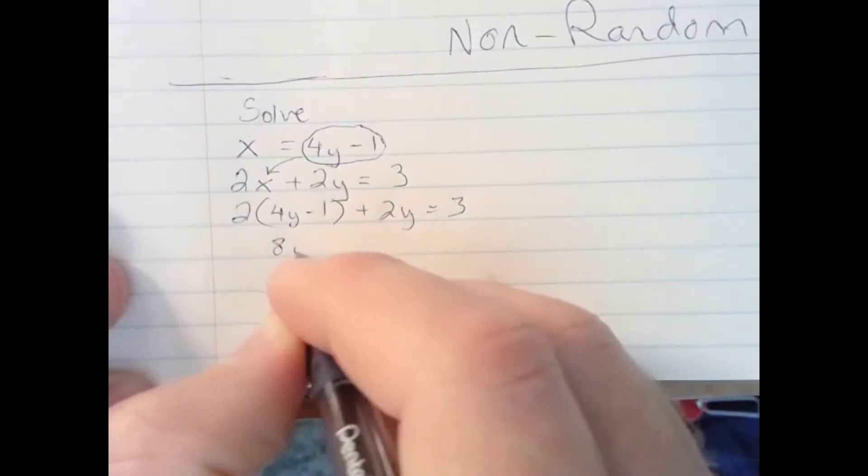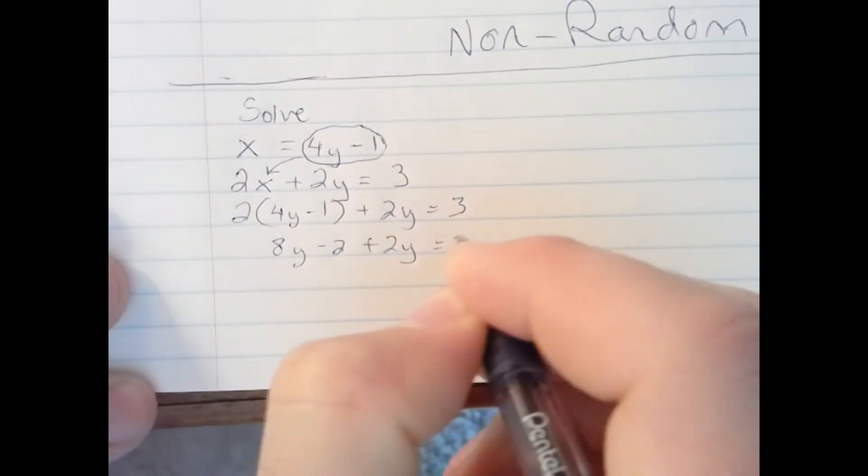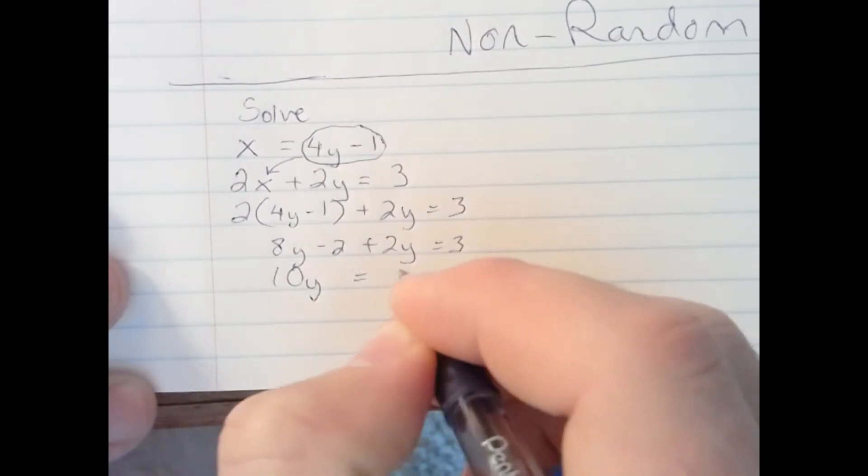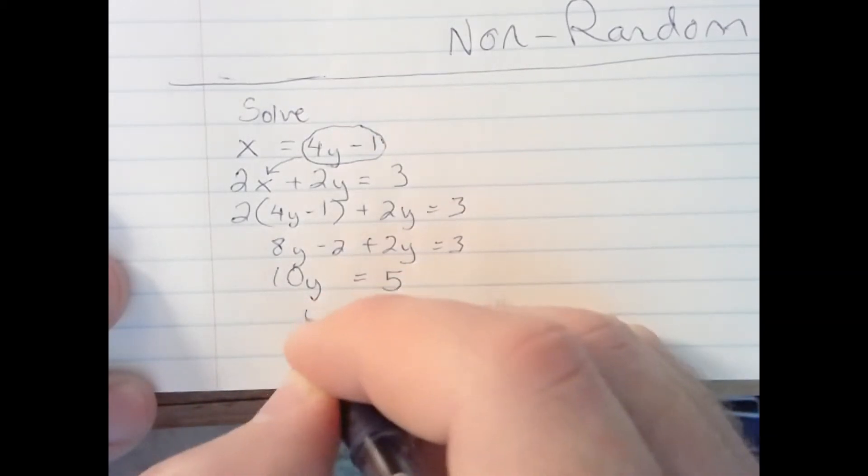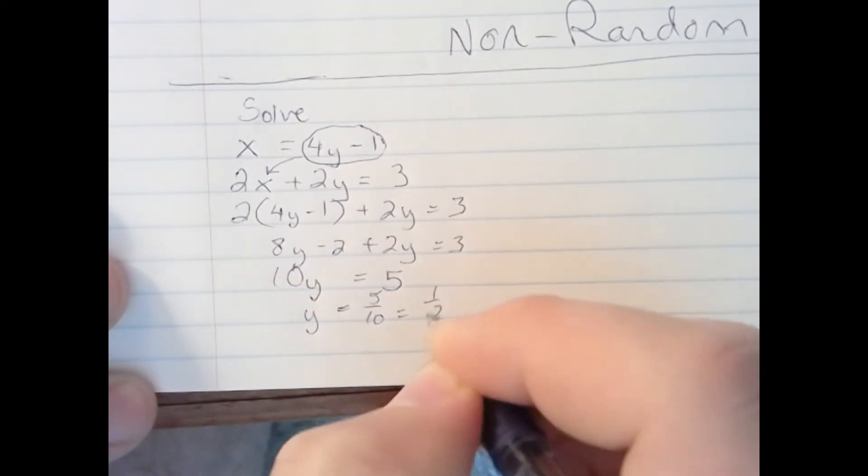Distribute the 2 to get 8y minus 2 plus 2y equals 3. Combine like terms, 10y. Add the 2 to both sides to get 5. Divide by 10 on both sides to get 5 tenths, which reduces to 1 half. The y coordinate is 1 half.